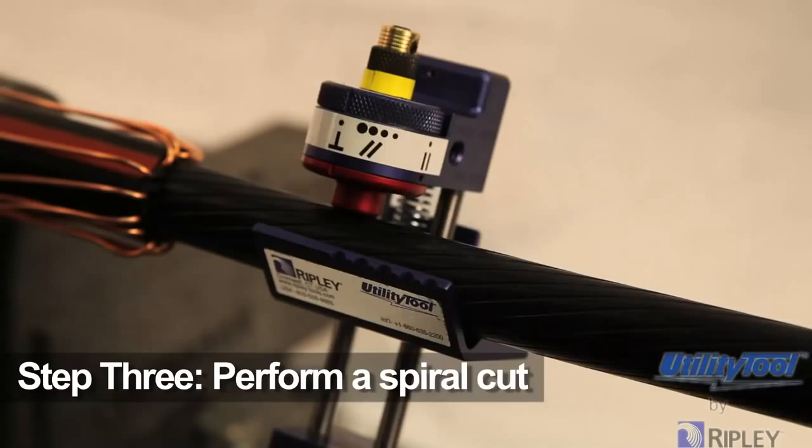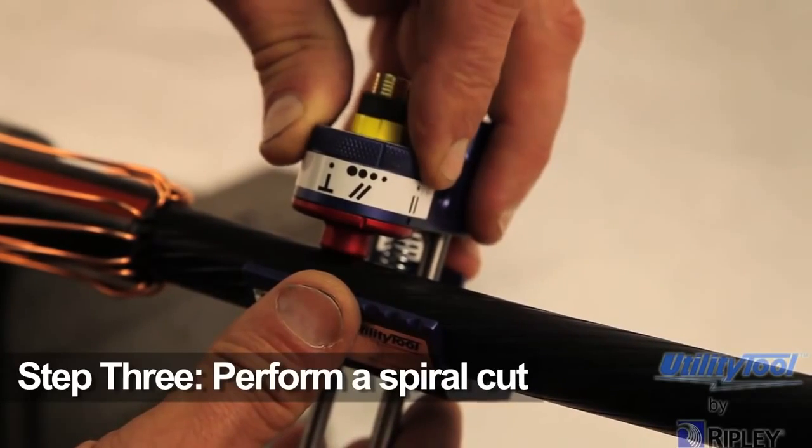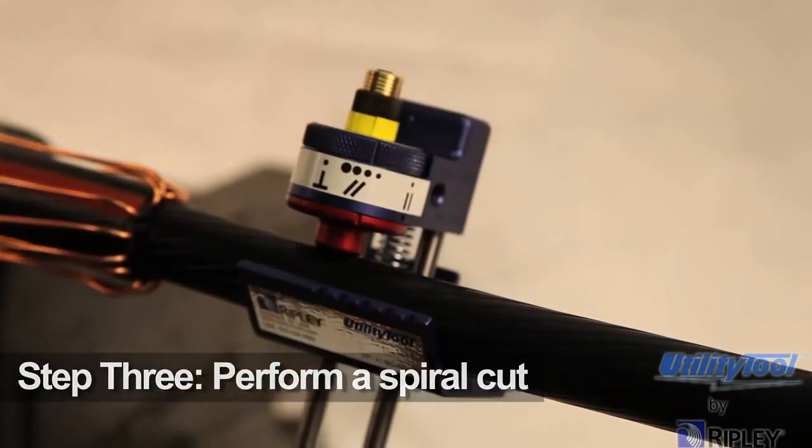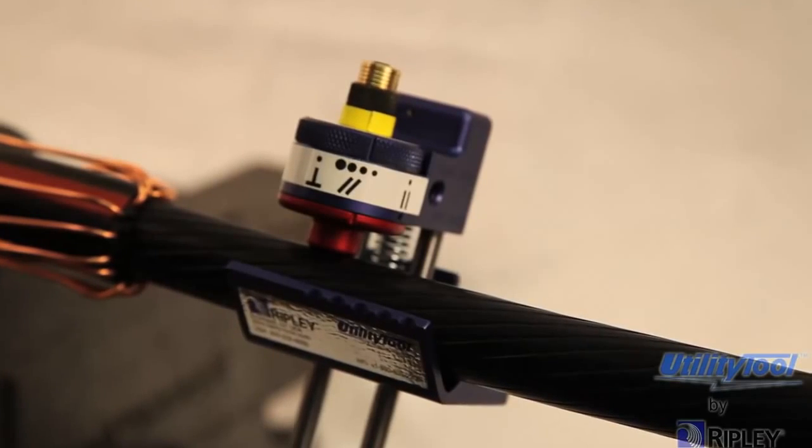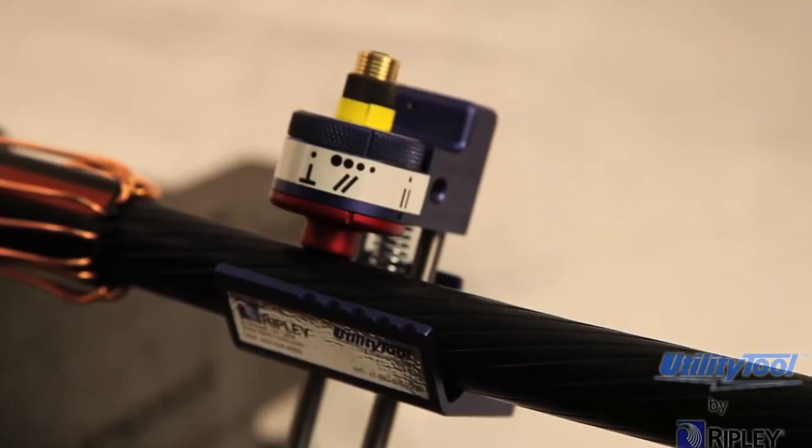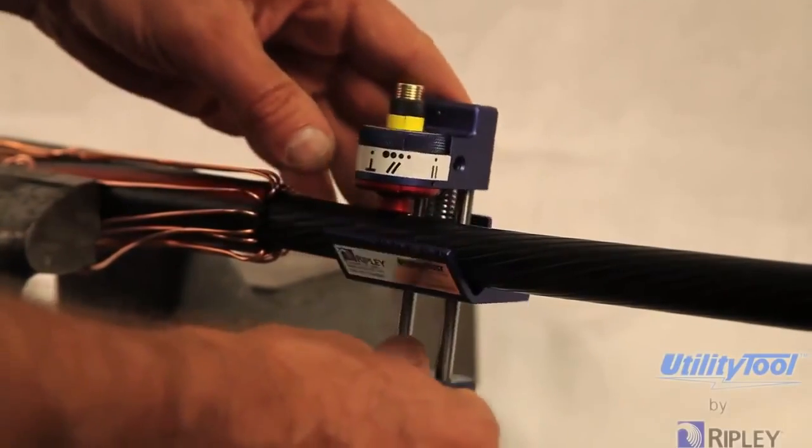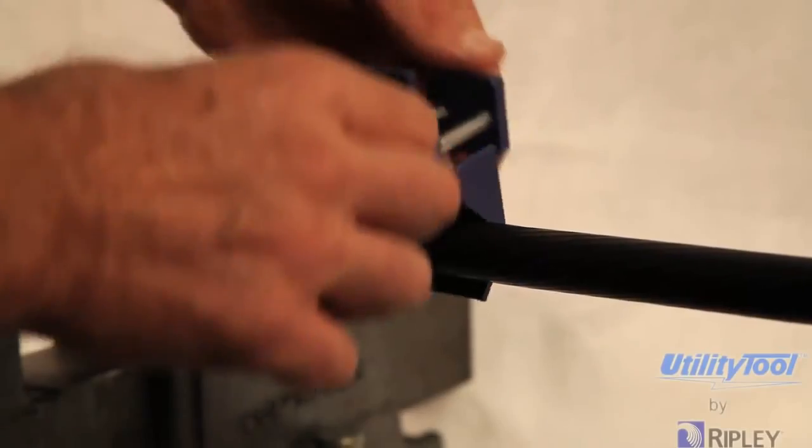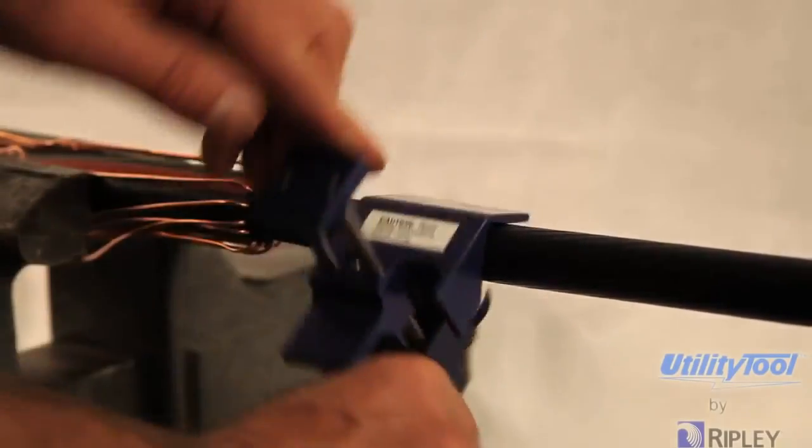Step 3. To perform a spiral cut, first turn the blade positioning indicator to one of the spiral cut locations. The large position will produce the narrowest spiral and it is meant for larger cables. Indexing it further will produce a wider spiral score, typically for smaller cables. Next, turn the tool counterclockwise and allow it to advance toward the end of the cable and completely off the cable.